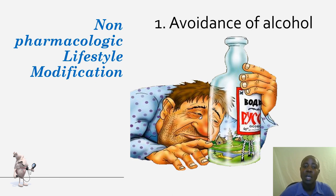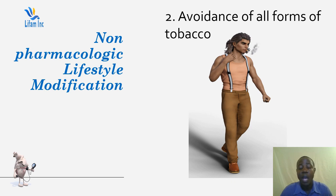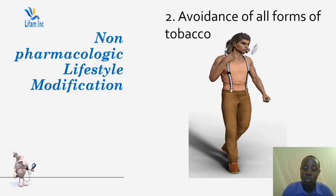The second important modification is tobacco smoking. Tobacco smoking always leads to high blood pressure and creates problems in bringing blood pressure down. We recommend that you do away with tobacco smoking so that you can have lower blood pressure and a good prognosis.